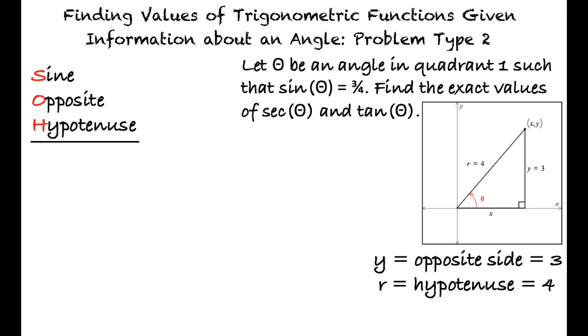Substituting the values for r and y into the Pythagorean theorem and solving for x results in x squared plus 3 squared equals 4 squared, which simplifies to x equals plus or minus the square root of 7.